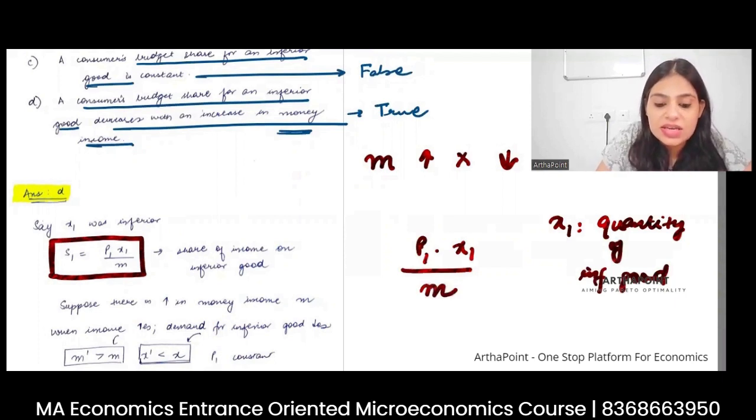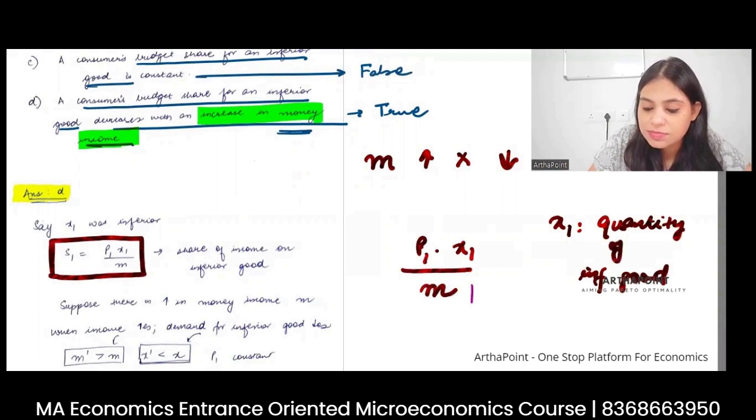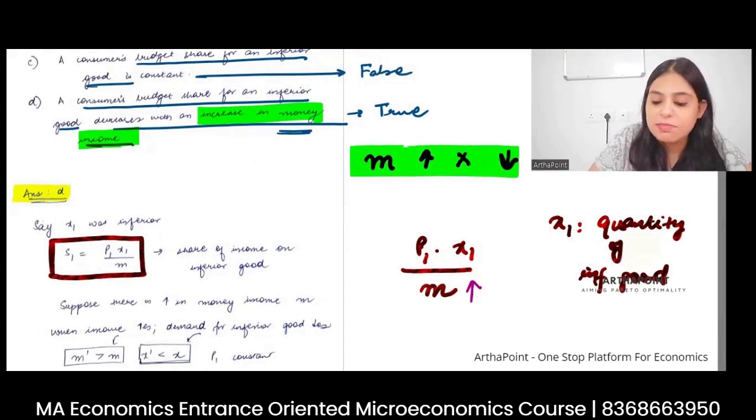Now it is saying that there is increase in the money income. So income is increasing. And then it is saying what happens to the share. But we know the rule: when income increases, demand decreases for inferior good. So when money income will increase, then X will decrease.